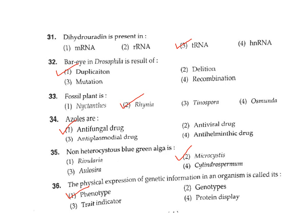Question 31: Where is dihydrouridine present? Dihydrouridine is a modified base. Correct answer Option 3.